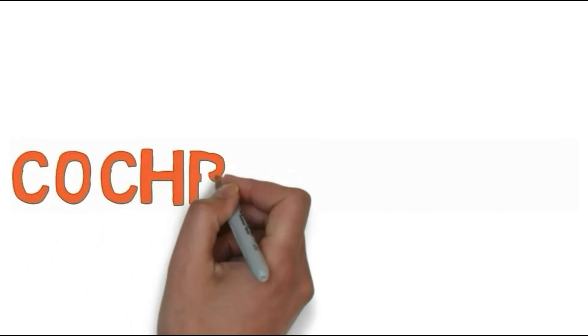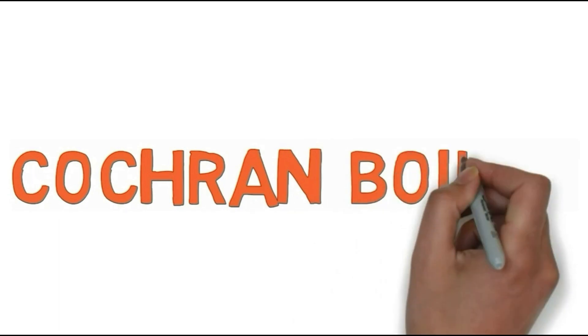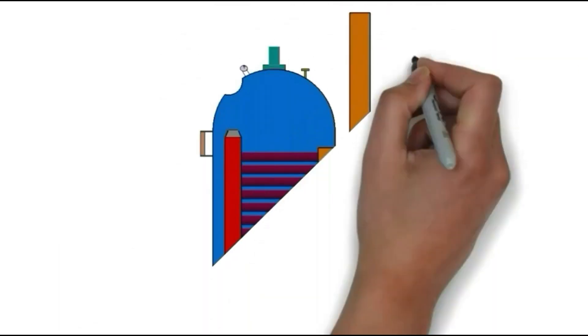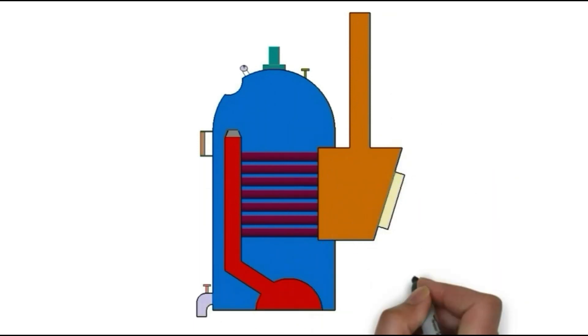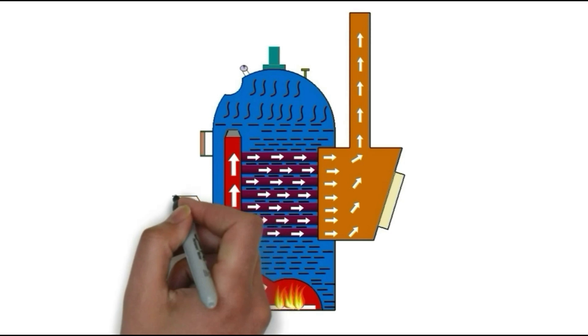First of all, we will see all the parts of Cochrane boiler. Shell. The body of boiler is known as shell.